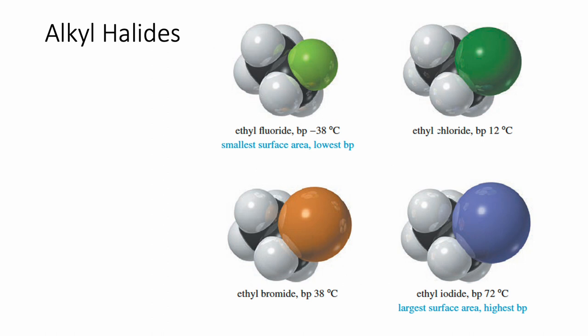The halogens differ in their electronegativity. Fluorine is the most electronegative halogen — it's also the most electronegative atom on the periodic table. Chlorine is less electronegative but bigger. Bromine is even less electronegative and even bigger. And iodine is the least electronegative but the biggest. You can get some visual indication of the relative size of the atoms in this image. Notice that a fluorine atom is about equal in size to a hydrogen, but as we go down the periodic table, those atoms get larger and larger.